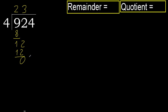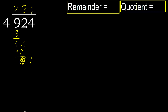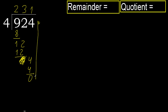Bring down the next digit: 4. 4 multiply by 1 is 4, which is not greater. Subtract. There is no number remaining, therefore finish.